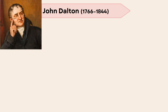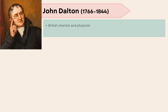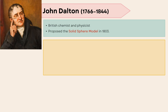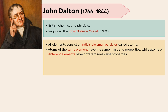John Dalton was a British chemist and physicist who proposed the solid sphere model in 1803. According to his atomic theory, all elements consist of indivisible small particles called atoms. Atoms of the same element have the same mass and properties, while atoms of different elements have different mass and properties. Compounds result from the combination of atoms in simple numerical ratios.